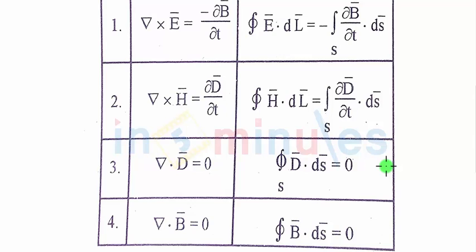That's all about Maxwell's equations. We have seen three sets: one for static fields, a second set for time-varying fields, and a third set for free space.